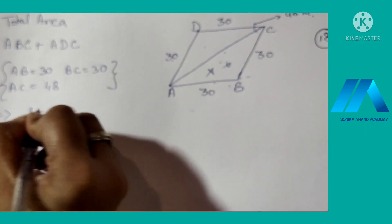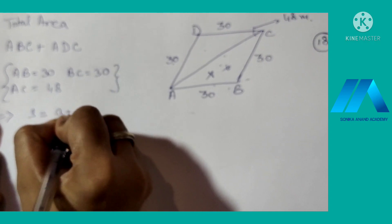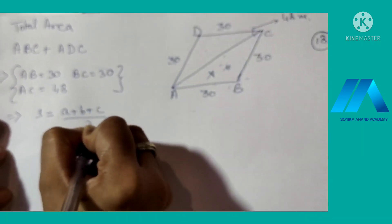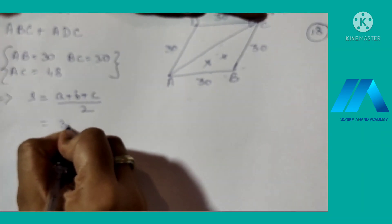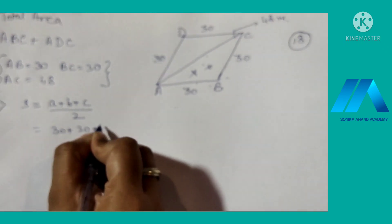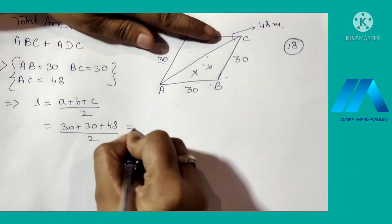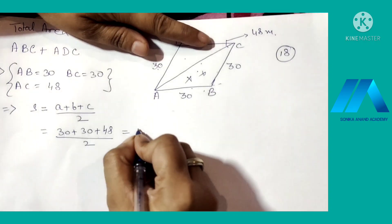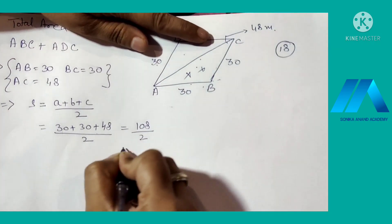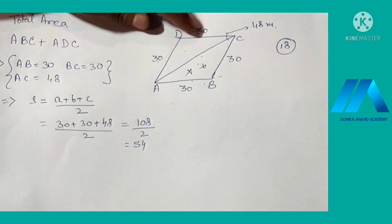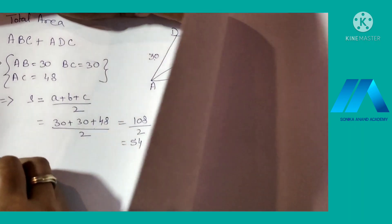So the value of S, that is semi-perimeter, is A plus B plus C over 2. Now we add all the three sides: 30 plus 30 plus 48 over 2. That means 60, 60 and 48, that is 108 over 2, and we get 54. Now this is the semi-perimeter.